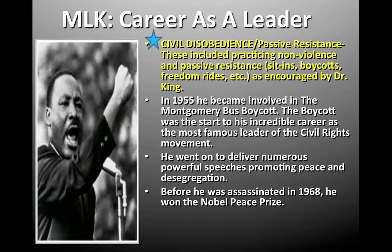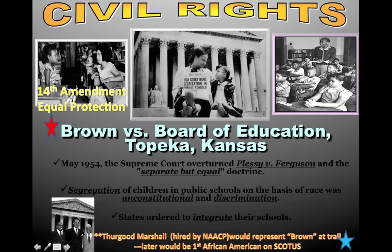Now let's talk about Martin Luther King Jr. I need you to get down the definition of civil disobedience or passive resistance. The key thing to know about MLK is that this included practicing non-violence and passive resistance such as sit-ins, boycotts, and freedom rides — doing whatever needed to be done to make your point, but in a way that you don't look bad and they look bad when they say no. In 1955, he became involved with the Montgomery bus boycott. He went on to deliver numerous powerful speeches, including the I Have a Dream speech. In 1964, he won the Nobel Peace Prize.